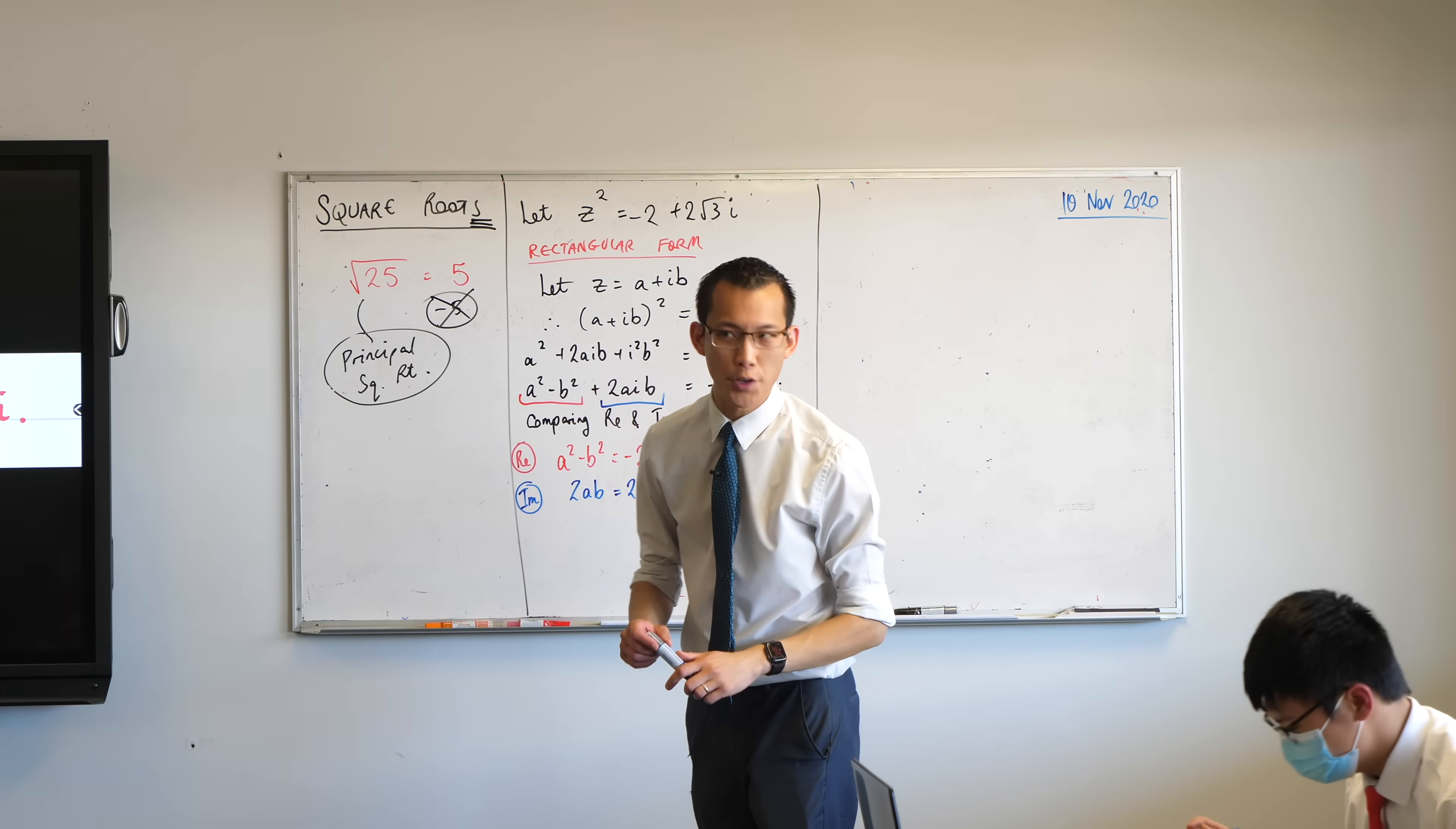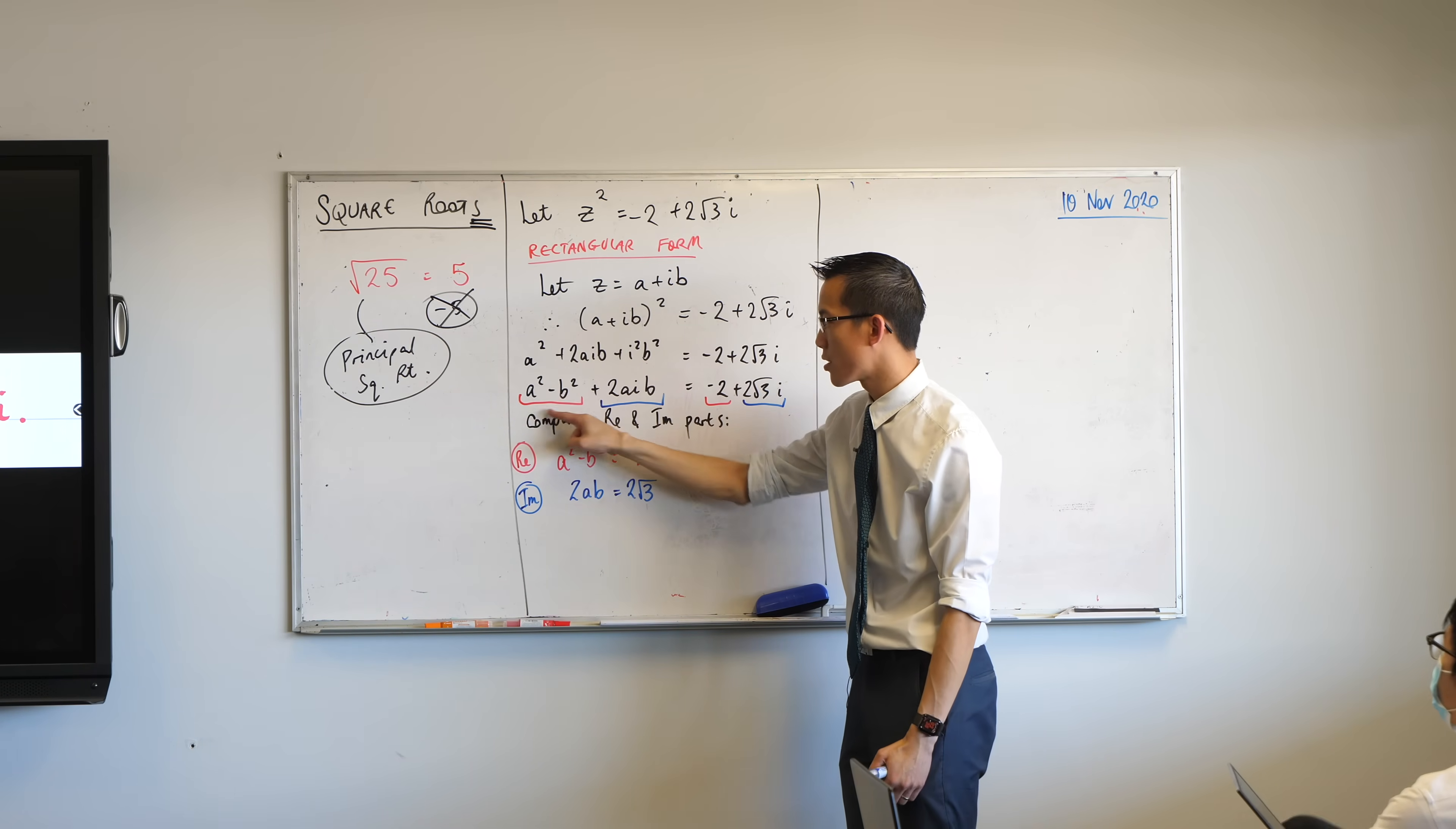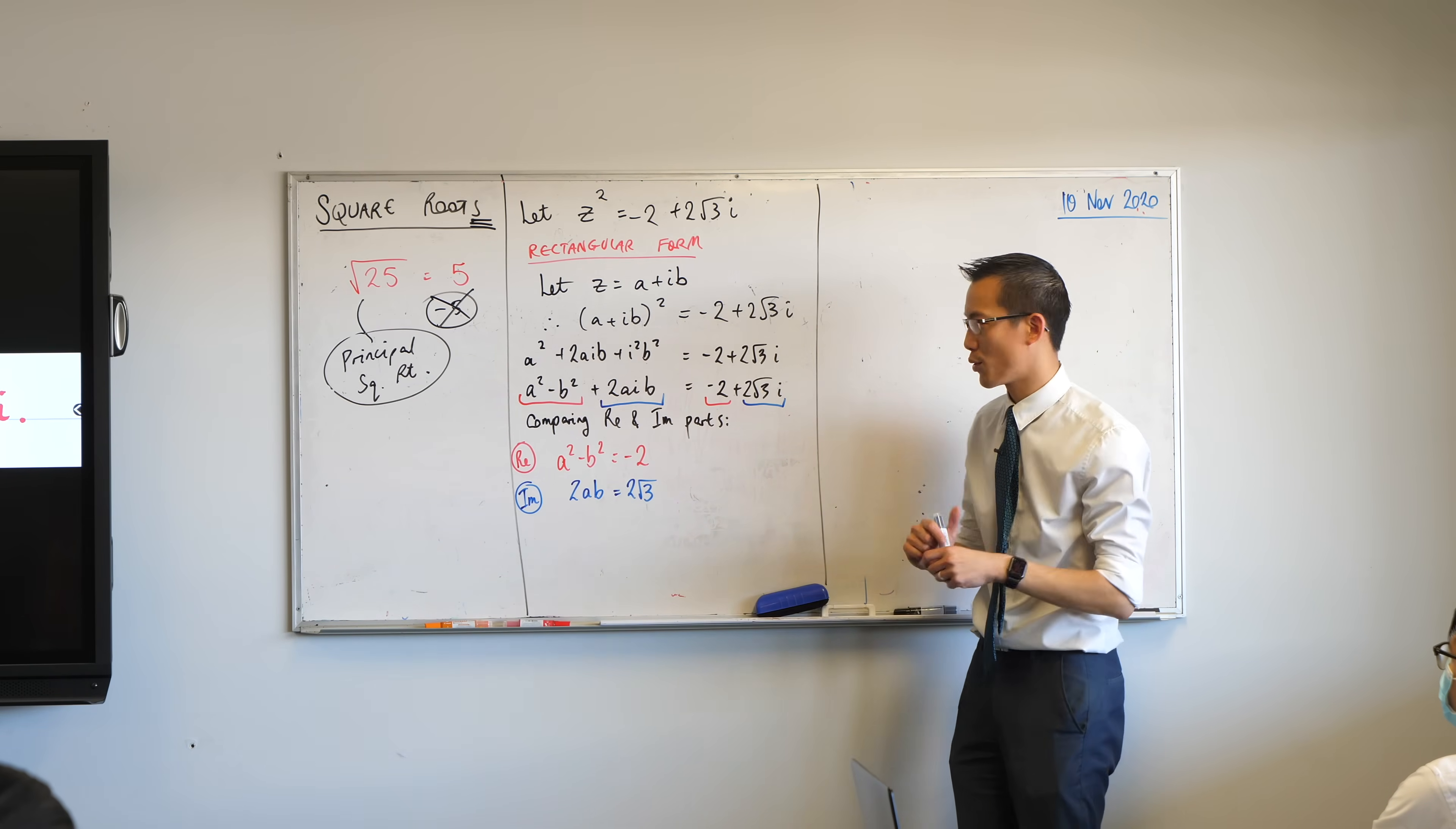All right, I see several of you have made progress which is excellent and I love that the wheels are turning. What have I done? I have just expanded here, expanded everything out. I've noticed an i squared so I have done a substitution there for negative one and notice those are the real parts, a squared minus b squared, and then what you get left with is the imaginary part separated out. And so I make my comparison. Here they are. And so what you've created is a pair of simultaneous equations. We're quite good at dealing with these. You just have to be a little bit cautious.